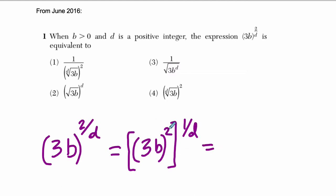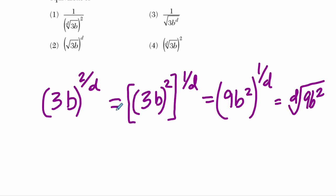If I think about it that way, what's going to happen? Well, first I square 3b. I distribute this 2 to both b and 3 and I get 9b squared. And that, we still have to find the dth root of that, which would be the dth root of 9b squared. That's one way to think about it.